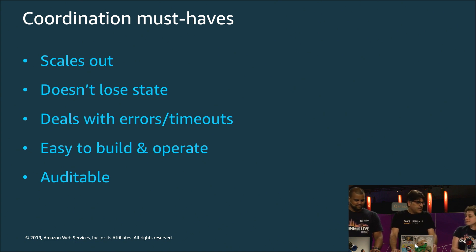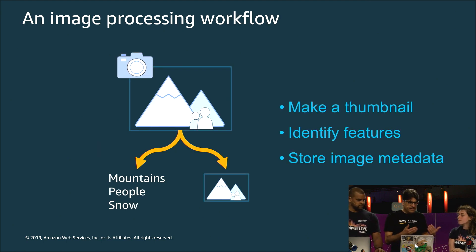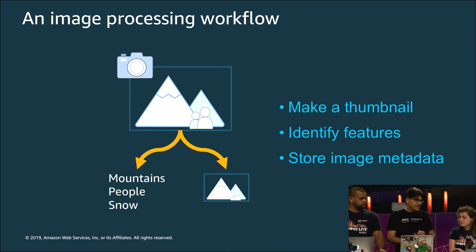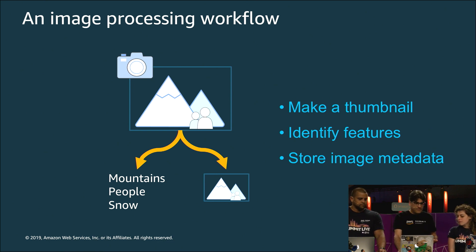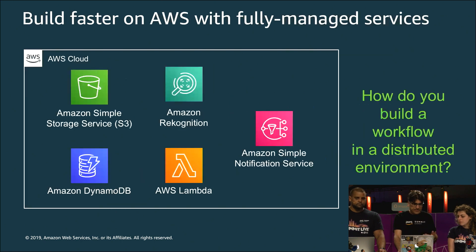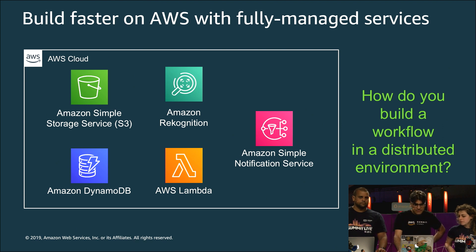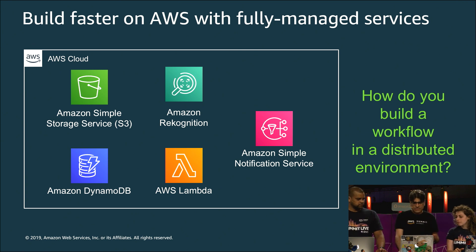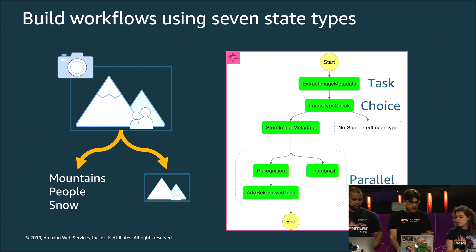And you want to be able to find out what's going on quickly, so you want it auditable — we'll get you a complete audit trail. What does a workflow look like? An example might be an image processing workflow. I upload a photograph to S3, I want to make a thumbnail of it, and maybe I want to send it to Amazon Rekognition and say, what's in this picture? So I can build a database of pictures on my website. There are three things I do: make a thumbnail, identify the features in the photo, and store that metadata somewhere like DynamoDB. You can build this faster on AWS using managed services like S3, Rekognition, DynamoDB, Lambda, and SNS. But this is a distributed environment — everything's on a network — so that's where Step Functions comes in.